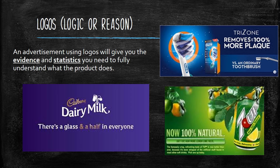Over here, down below, is a 7Up soft drink that says 'now 100% natural,' and the marketing team has presented it showing how natural it is — as if this soft drink grows off trees and they're getting products straight from a tree. Over here is Cadbury — 'there's a glass and a half in everyone' — this campaign was saying that in every block of chocolate, there is a glass and a half of milk.